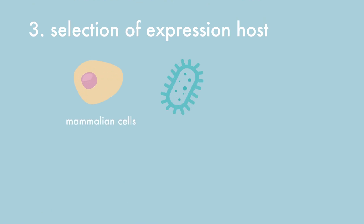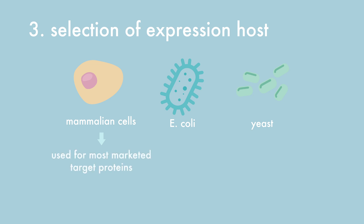Then follows the selection of the expression host. Recombinant proteins can be produced in E. coli, yeast, mammalian cells, and even by transgenic animals. All these expression hosts have different pros and cons. Most marketed target proteins are produced in cultured mammalian cells. In particular, Chinese hamster ovary cells are used.